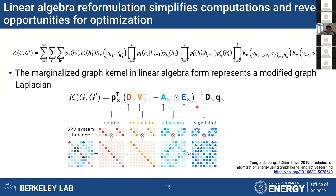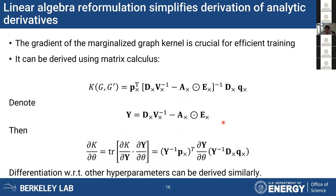This is the linear algebra system that we form. As you can see, it is essentially a generalization of the graph Laplacian. The system is symmetric and positive definite, so we can easily solve it with an iterative linear solver such as conjugate gradient. This linear algebra form is also very friendly for differentiation, so we can write out the derivative of the kernel with respect to the hyperparameters using matrix calculus.